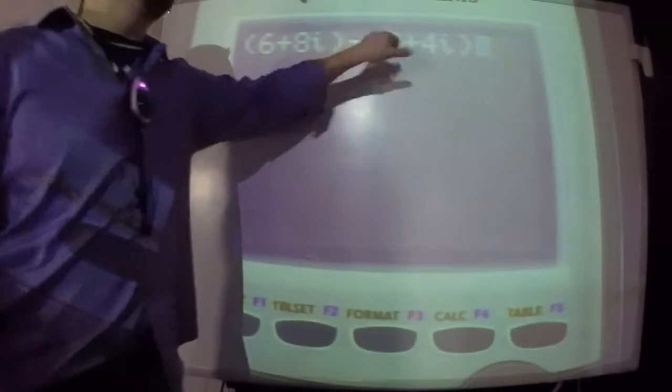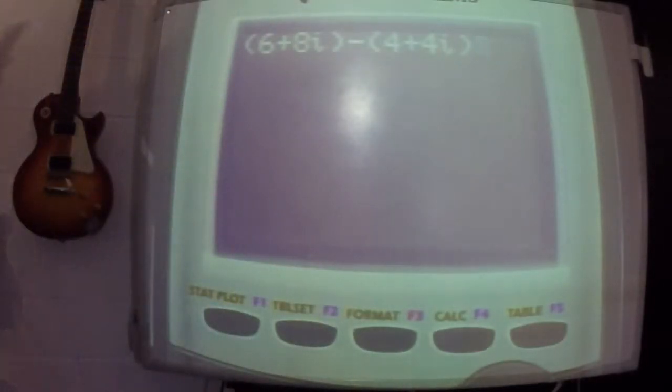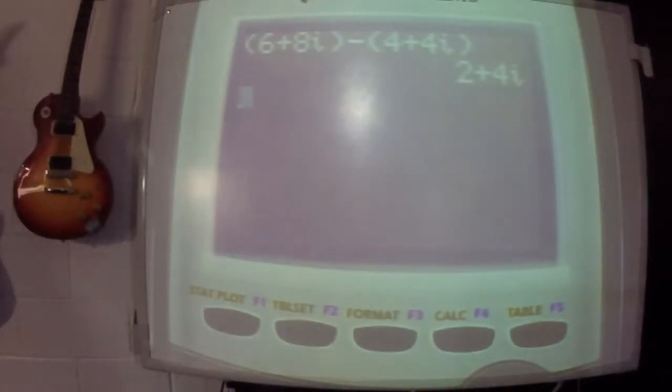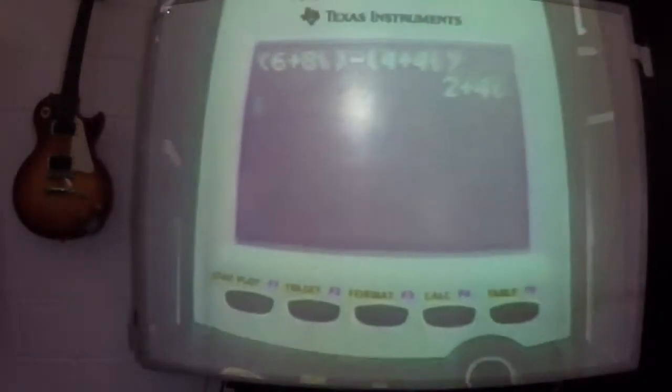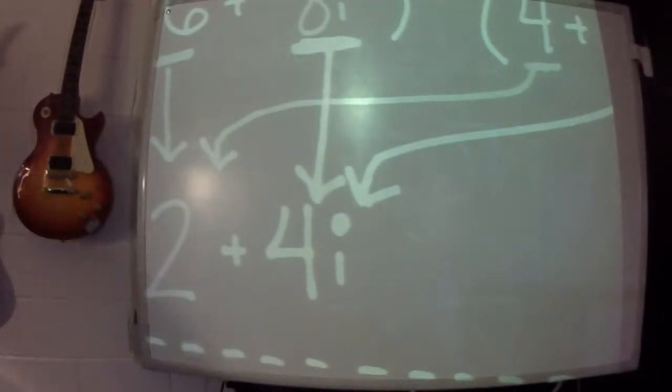And the good thing about that is your calculator will not forget to distribute the minus for you. The calculator, if put it in right, is going to get it right. So you got 2, 2 plus 4i.